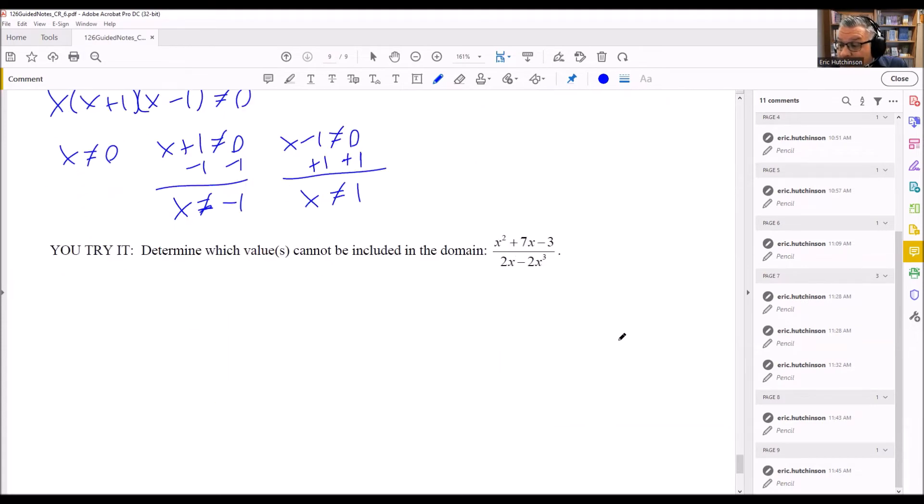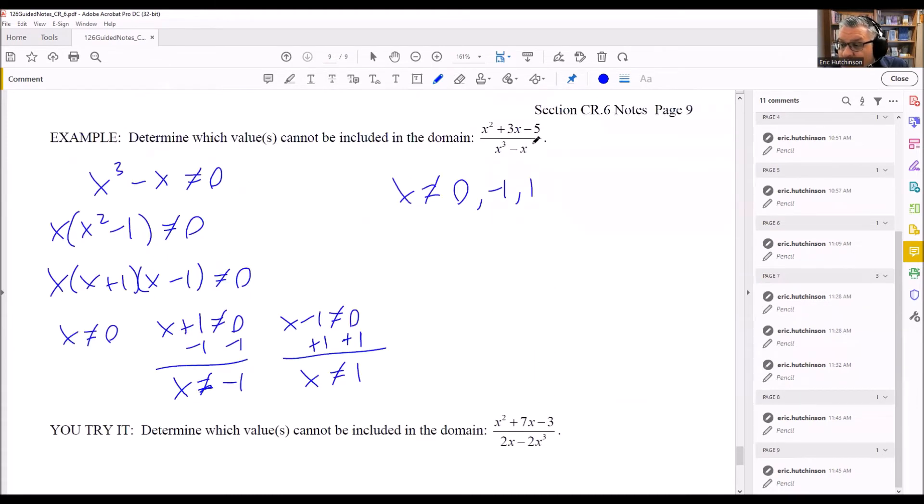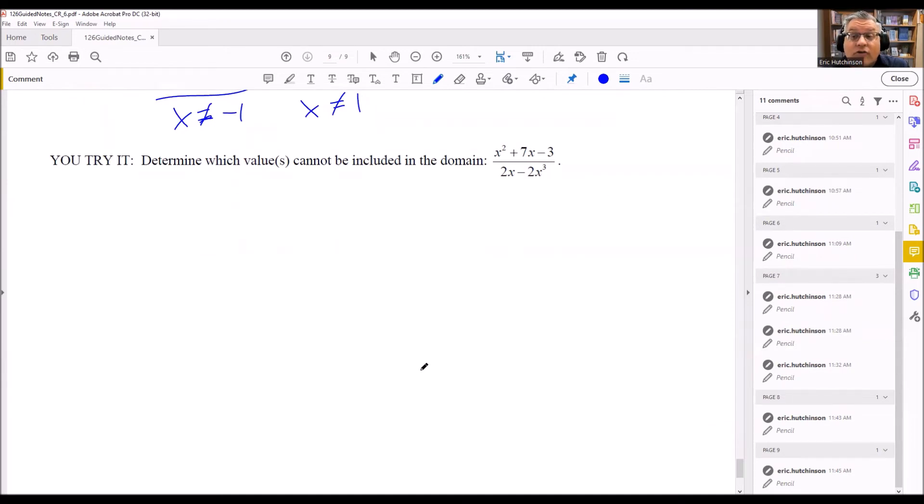Let's look at another example, similar type question. Notice that for the last problem, I didn't do anything with the top. That's because it's okay for the top to be zero, it's just that the bottom cannot be zero. So in this case, ignore the top. You're not going to do anything with it. You're only going to focus on the denominator on the bottom. So again, these kind of problems, you just take whatever is in the denominator, and you're just going to put a not equal to zero after it. And then we're going to solve this.